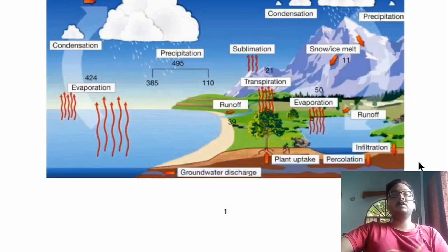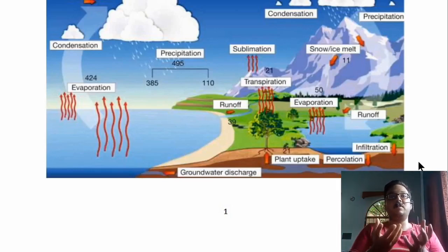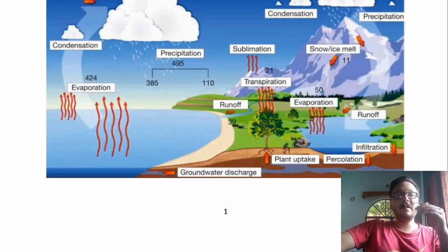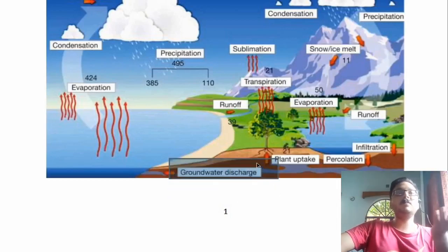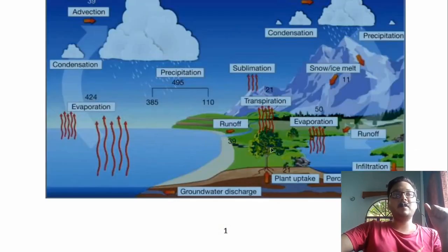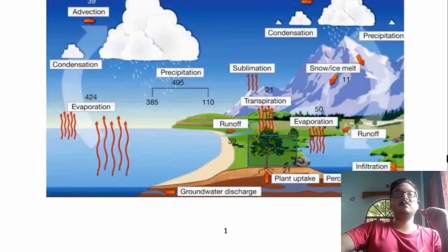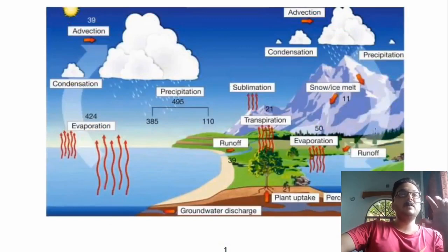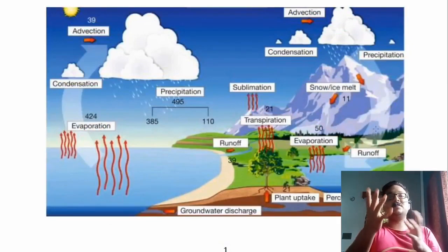Groundwater discharge comes from groundwater storage formed due to infiltration and percolation of water from runoff or from lakes and rivers. That percolation recharges our groundwater — the groundwater we drill and extract. Groundwater can also discharge to a lower-altitude location, similar to surface runoff. There is also plant uptake, where plants take up water through their roots for photosynthesis.